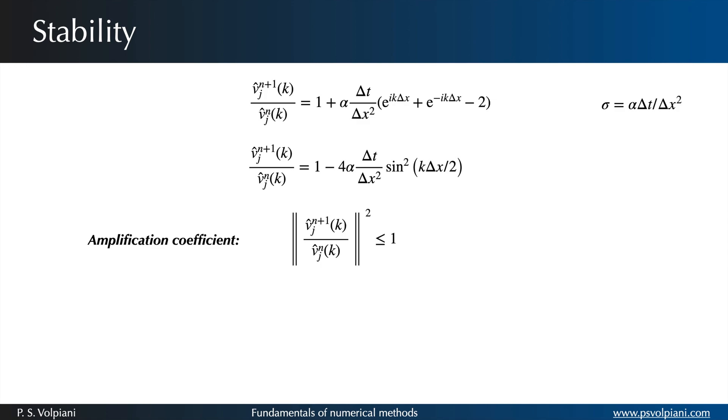Writing alpha times delta t over delta x squared equals sigma, the condition for stability is given by the following formula. But the term sine squared k delta x over 2 is always positive. Thus, to satisfy the previous equation, we must have sigma less than or equal to one-half. This equation gives the stability requirement for the forward-time central-space scheme when applied to the one-dimensional heat equation.